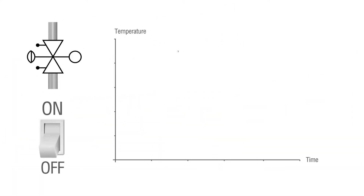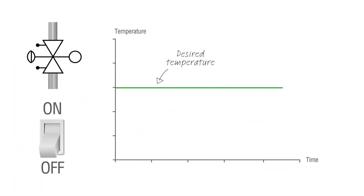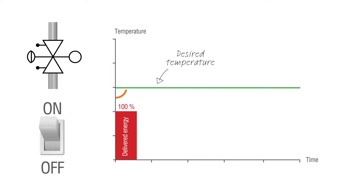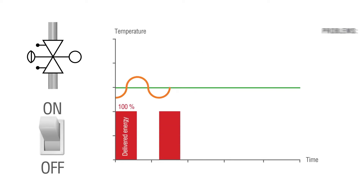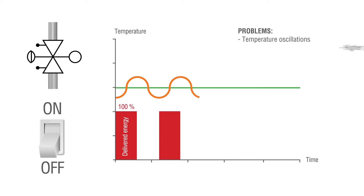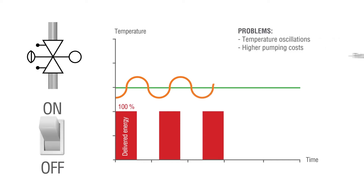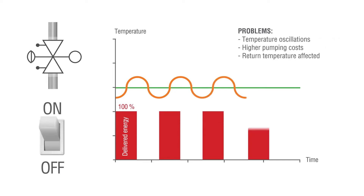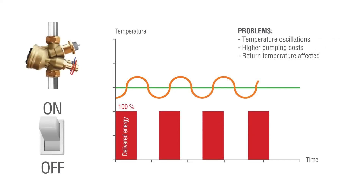If you use on-off control, the valve is either fully open and delivers 100% flow or fully shut. This leads to temperature oscillations and higher pumping costs. The return temperature is also affected.